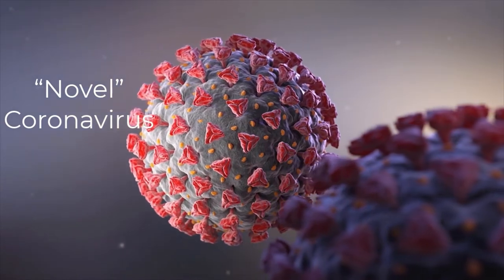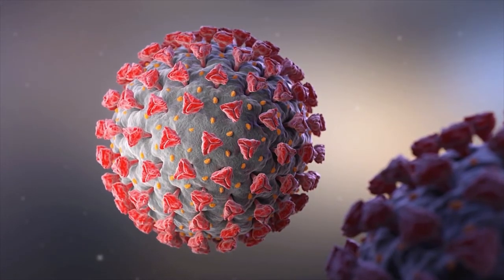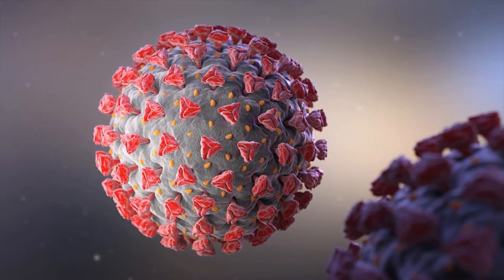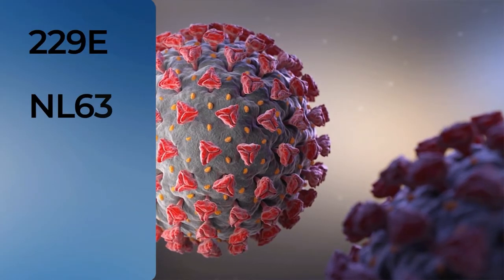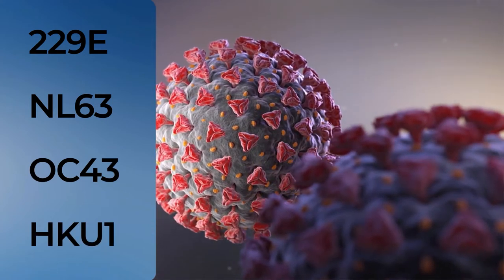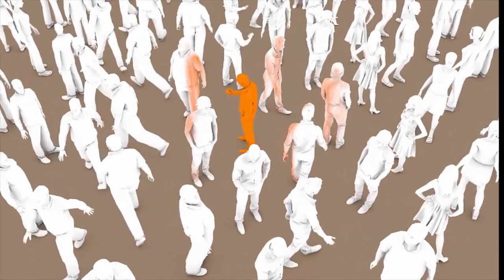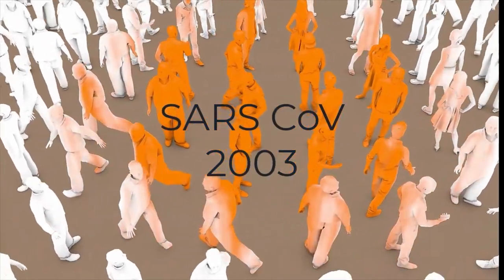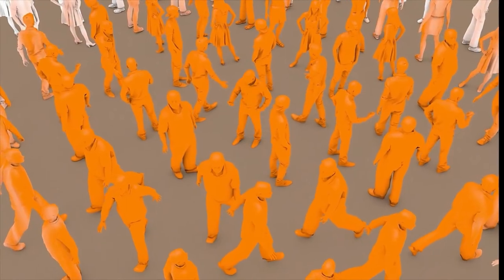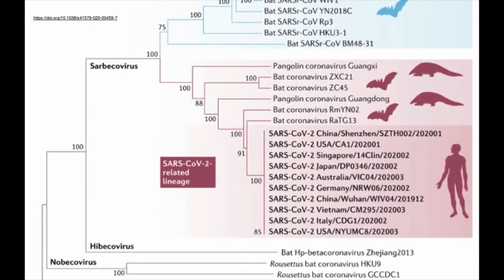Coronaviruses are named for the crown-like spikes on their surface. Human coronaviruses were first identified in the mid-1960s, and people around the world commonly got infected with the 229E, NL63, OC43, and HKU1 coronaviruses. However, certain animal coronaviruses can evolve, infect humans, and cause outbreaks, including SARS-CoV, the virus that caused the 2003 SARS outbreak, and MERS-CoV, the virus that caused the 2012 outbreak. The phylogenetic analysis of the SARS-CoV-2 genome places it in the subgenus coronavirus of the genus beta coronavirus, grouped in a distinct lineage together with four bat coronaviruses as well as two pangolin coronaviruses.